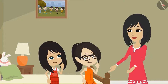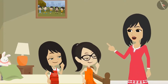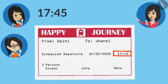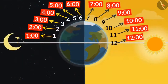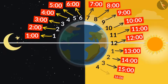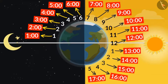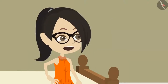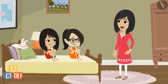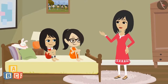Yes. And when I saw that our train is at 45 minutes past 17, I said that our train is at 45 minutes past 5 o'clock in the evening. Because you started counting after 12 — 13, 14, 15, 16, and 17 — that means 5 o'clock in the evening. Yes, Neha. Then how will we write 12 o'clock at night? Why don't you try it yourself?